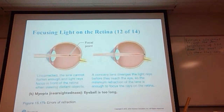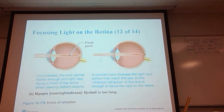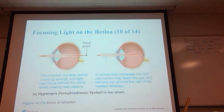In nearsightedness without glasses, you get a focal point in front of the retina. A concave lens starts to bring those lines together and you get a more correct focal point. In other words, in nearsightedness the eyeball is too long, whereas in farsightedness the eyeball is too short.